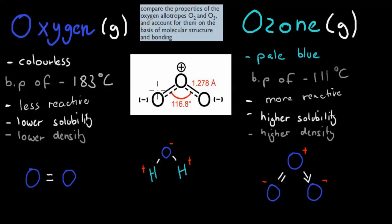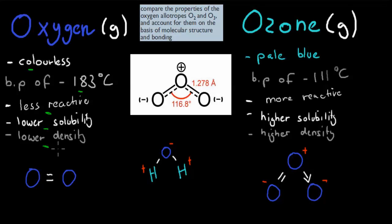So first I'll quickly go over just some of the actual properties that these have — both their chemical and their physical properties. Oxygen is colorless — especially the gaseous version is colorless. It has a boiling point of -183 degrees Celsius, which means you need to get it down to -183 degrees Celsius to turn it from gaseous to liquid. It's less reactive than ozone, has a lower solubility than ozone, and has a lower density than ozone as well.